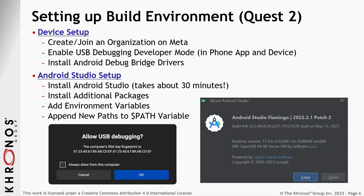First, you'll need to set up the device. For the Quest 2, you'll need to join an organization on Meta — even if you're not part of an organization, you can be an individual with one. You need to enable USB debugging so that when you connect the Quest 2 to your computer it actually sends all the signals over. One gotcha is that you have to do it in both the headset itself and the phone app — if you don't do it in the phone app, it's not going to sync. Finally, you need to install the Android drivers to connect through Android's ADB interface.